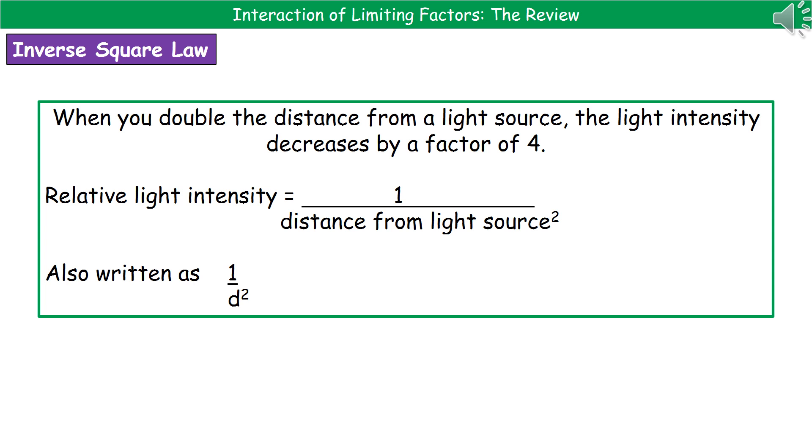That can be represented in two ways in terms of an equation. First one is on that middle line there. The relative light intensity is one divided by the distance from the light source squared, or the shorthand version one over D squared. I have seen this as a practice question where they have asked you to identify the equation that represents the inverse square law. Make sure you know the different symbols so you can identify it in case it comes up as a multiple choice question in future exams.